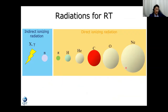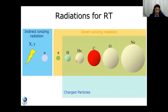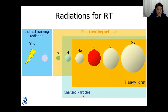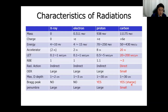I listed here some of the radiations that have been used in cancer treatment. Among these radiations, proton, helium, carbon, oxygen, and neon ions are categorized as charged particles. Charged particles except proton — so helium, carbon, oxygen, and neon ions — are usually referred to as heavy ions. This table summarizes the characteristics of X-ray, electron, proton, and carbon ions as therapeutic radiations. The mass, charge, energy, accelerator size, LET, RBE, radiation action, oxygen enhancement ratio, presence or absence of the Bragg peak, and penumbra size are summarized.